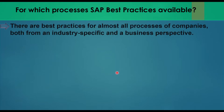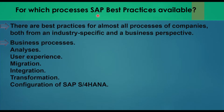For which processes are SAP best practices available? First, business processes — for a wide range of requirements and industries. For example, in MM, we can consider a particular process like subcontracting. It is completely defined what the best way is to perform that business process, like subcontracting or consignment. Then there is analysis — SAP provides ready reports for analysis.